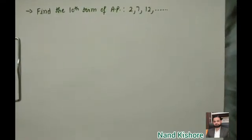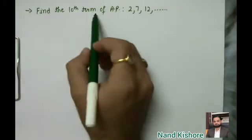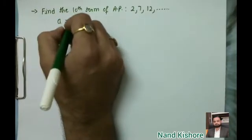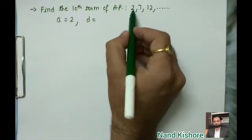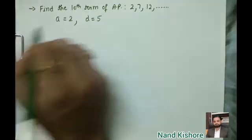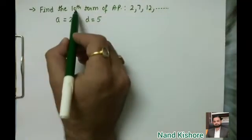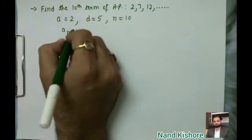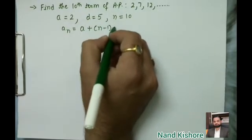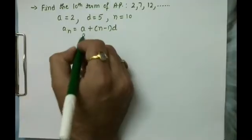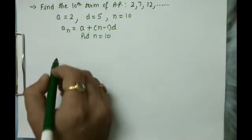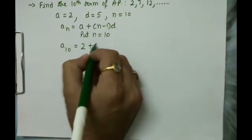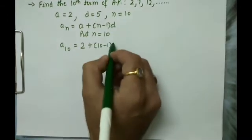Now let's see how this formula is used. Find the 10th term of the AP: 2, 7, 12. The first term is 2. The common difference is 7 minus 2 or 12 minus 7, which is 5. We need to find the 10th term, so n equals 10. Using the formula: a_n equals a plus n minus 1 into d, we get a_10.